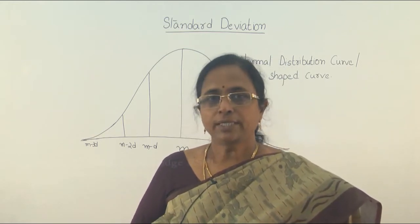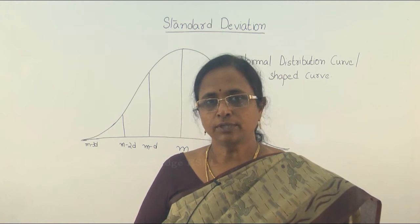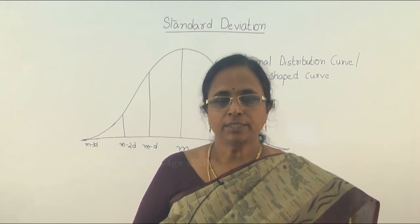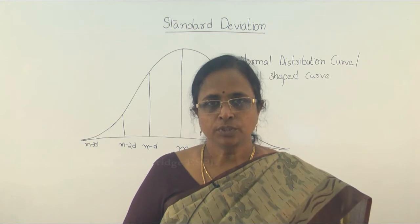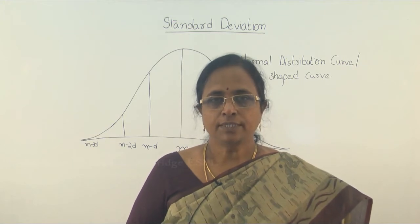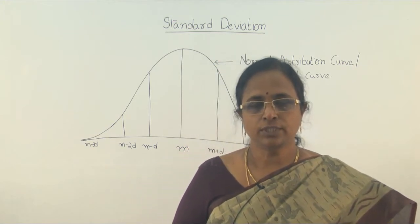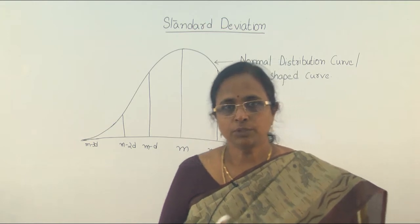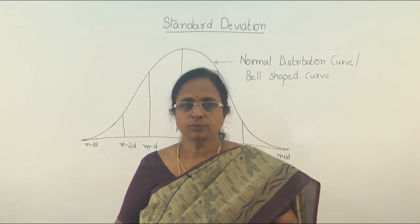The next is mode. Mode is where a number is repeated again and again — the most frequently occurring data is called mode. Suppose you have the data 1, 2, 2, 3, 4, 5. Then 2 is repeated 2 times, so 2 becomes the mode.